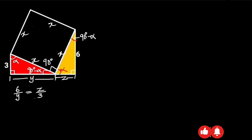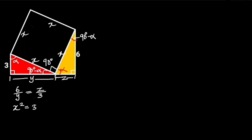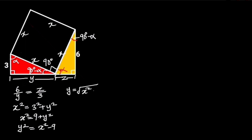To find the value of y, let's consider the red triangle. From Pythagoras' theorem, x squared is equal to 3 squared plus y squared. 3 squared is 9, so x squared is equal to 9 plus y squared. Making y squared the subject gives us y squared equals x squared minus 9. Taking the square root of both sides: y equals the square root of x squared minus 9.